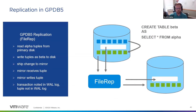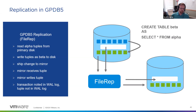In Greenplum 5, replication is handled by a process called file rep. A very common operation is a CTAS — a create table as select. For example, you have an alpha table and want to make a beta table: create table beta as select star from alpha. As that table is created, it gets replicated from the primary to the mirror. File rep works behind the scenes: for heap tables it copies the binary data across, and for AO tables it copies on a block level. What goes into the transaction log is just a small notation that the transaction happened — the actual tuples are not in the WAL log.